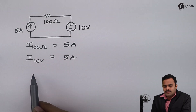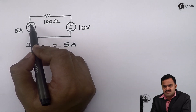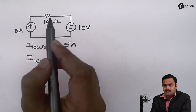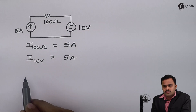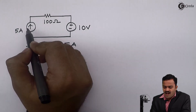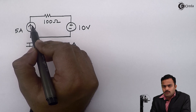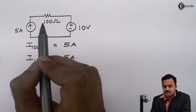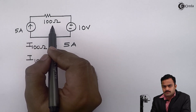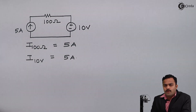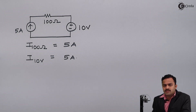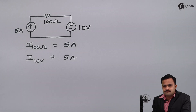Not only the magnitude but the direction is also fixed up by the current source. Whenever a current source is given in a problem, it is the only parameter which is going to decide the value and direction of current flowing through the elements in series with it. There is no need to do any calculation to get that.